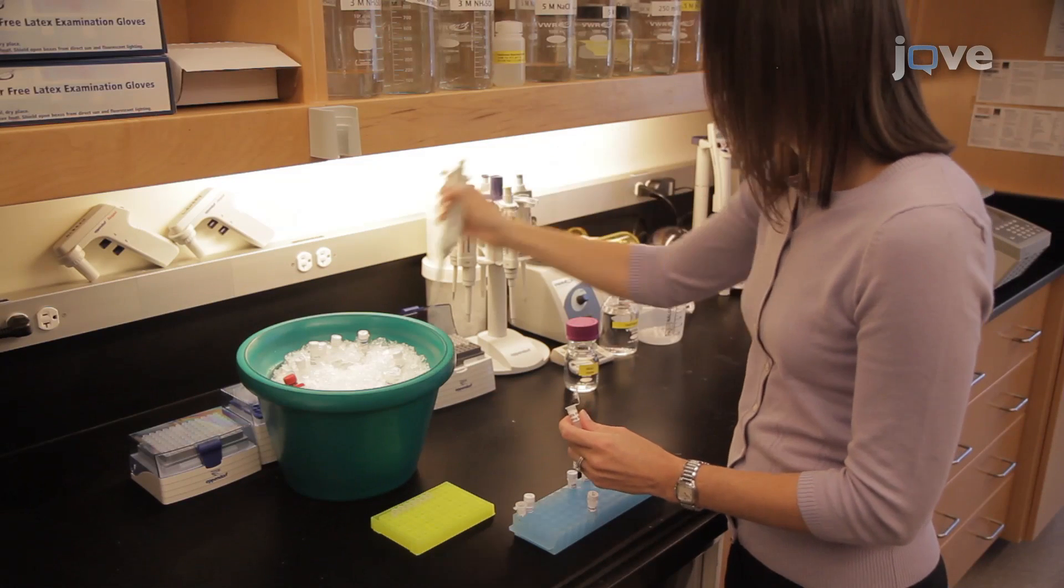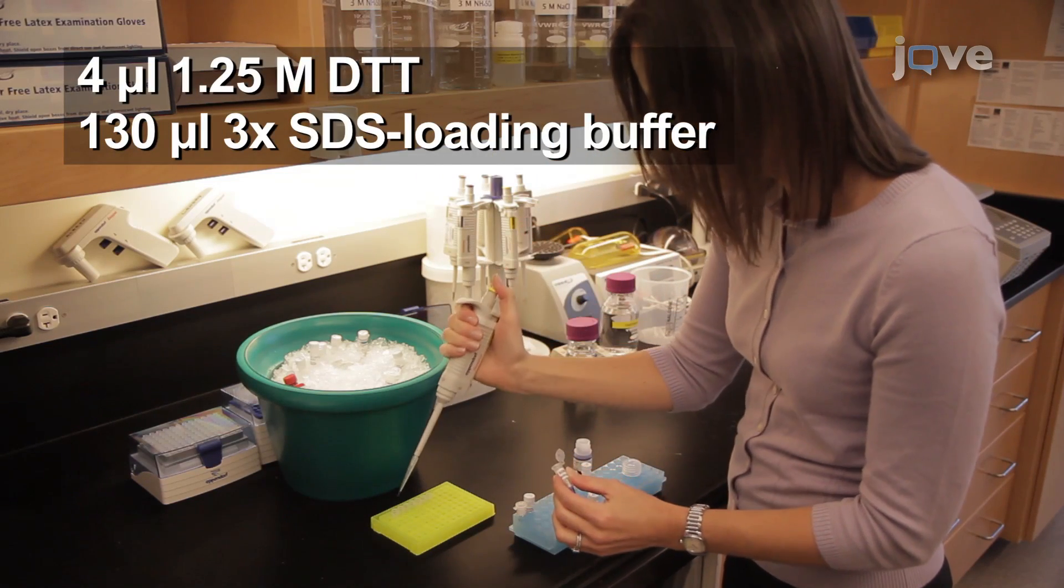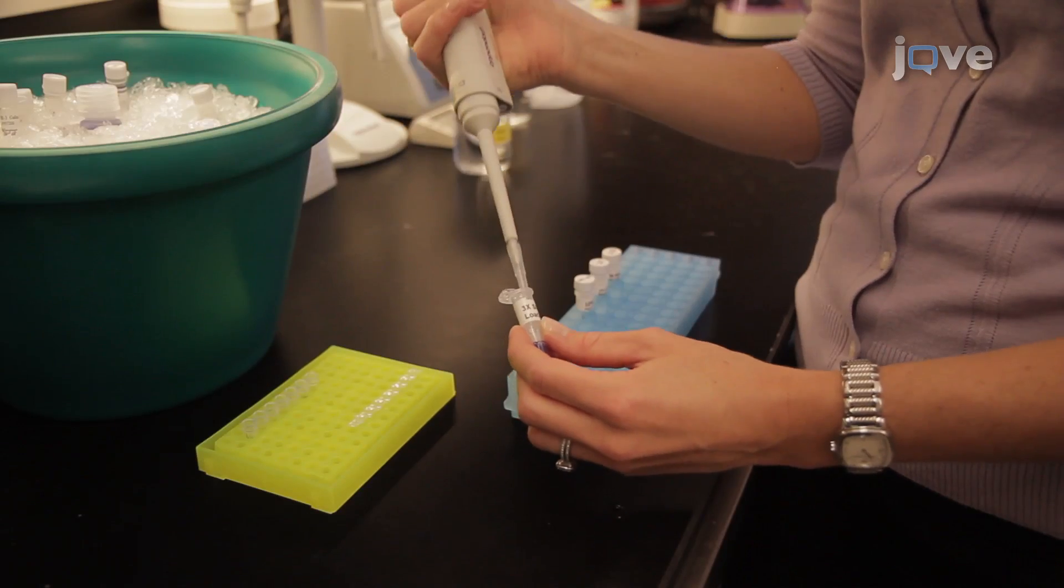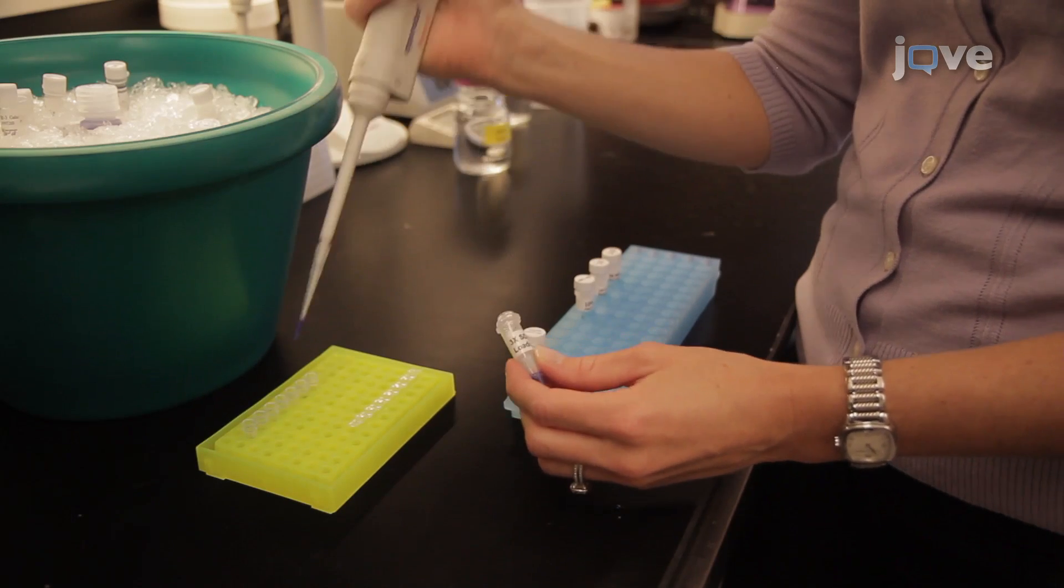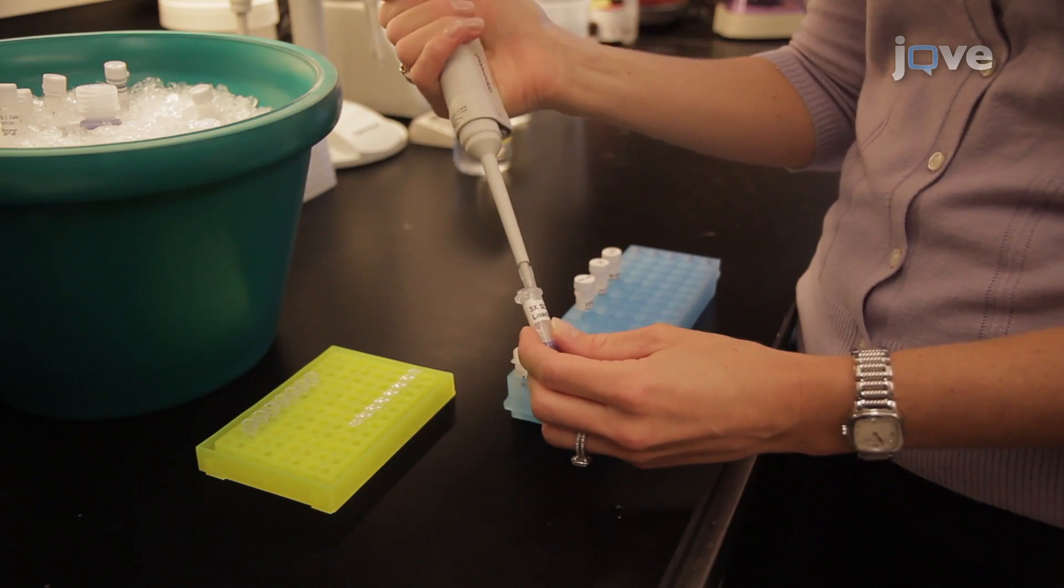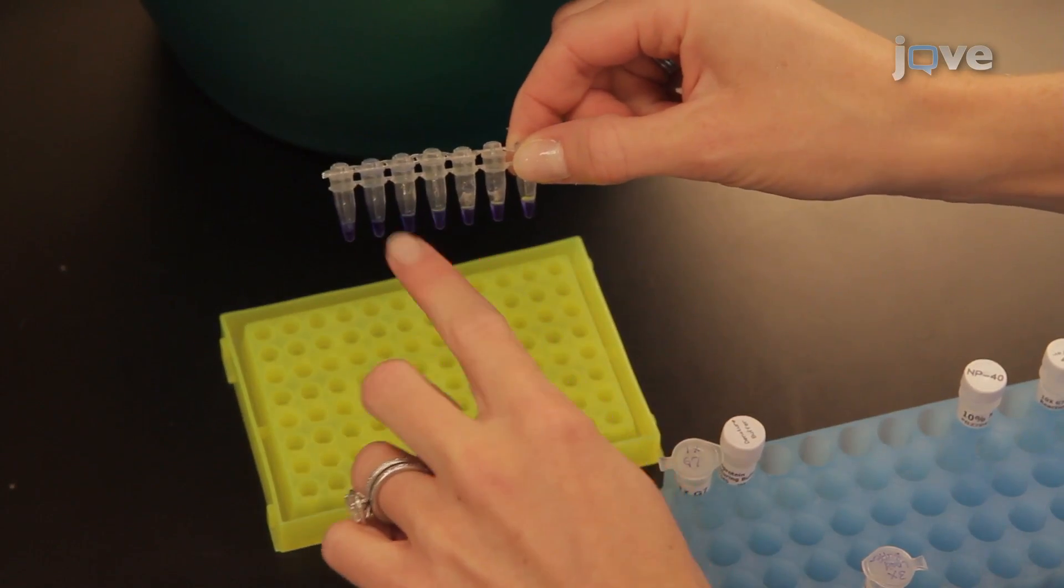To set up SDS-PAGE, prepare fresh 3X reducing SDS loading buffer with DTT. Add 12.5 microliters of the prepared 3X reducing SDS loading buffer to each sample. Close the tubes with new caps and gently tap the tubes to mix.